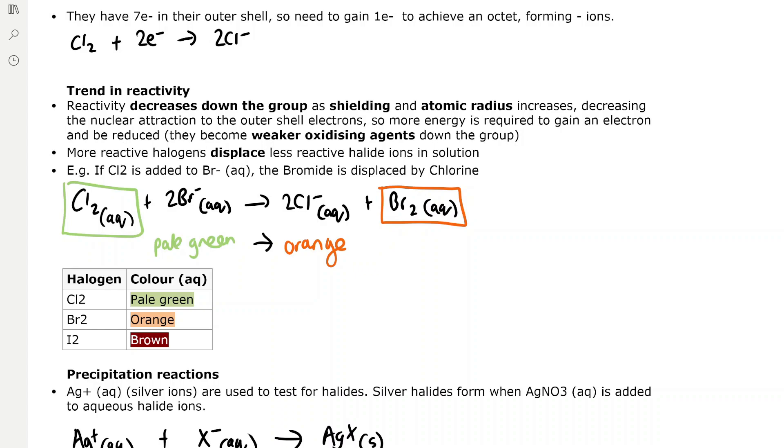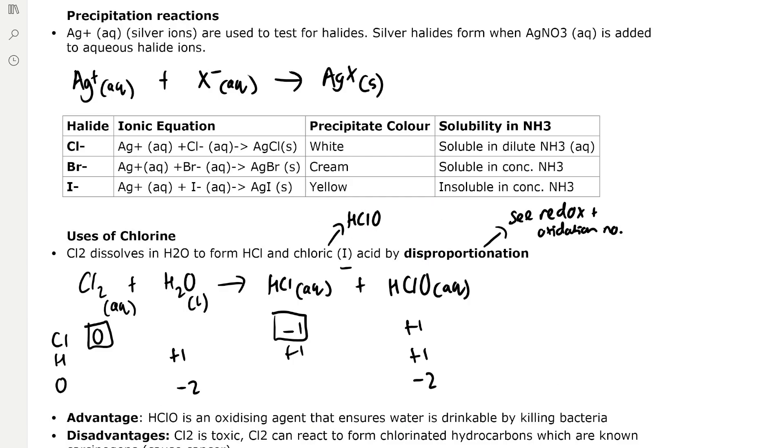For precipitation reactions, Ag plus or silver ions are used to test for halides. Silver halides form when silver nitrate is added to aqueous halide ions. The ionic equation is Ag plus aqueous reacts with X minus, representing any halide ion, forming AgX as a solid precipitate. This differentiates between halide ions.